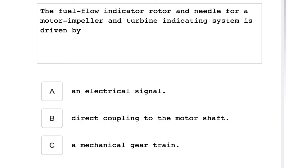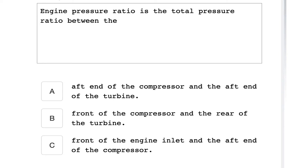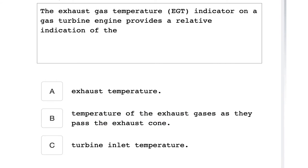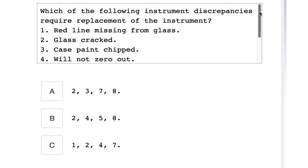The fuel flow indicator rotor and needle for a motor impeller and turbine indicating system is driven by an electrical signal. Engine pressure ratio is the total pressure ratio between the front of a compressor and the rear of the turbine. The exhaust gas temperature indicator on a gas turbine engine provides a relative indication of the turbine inlet temperature.